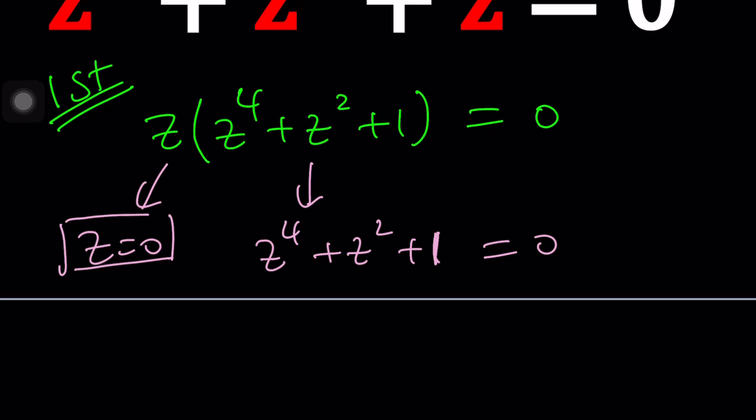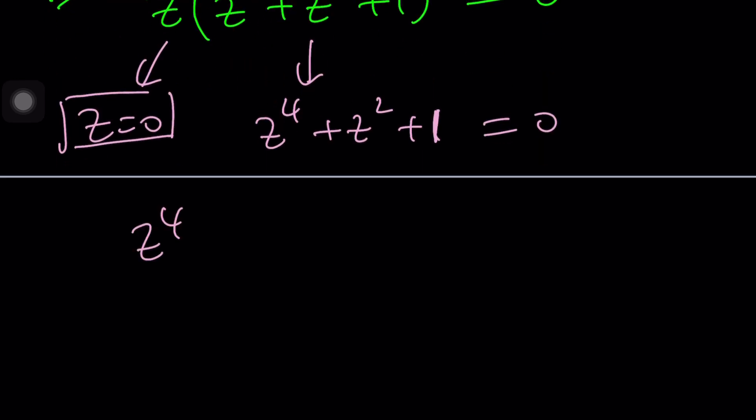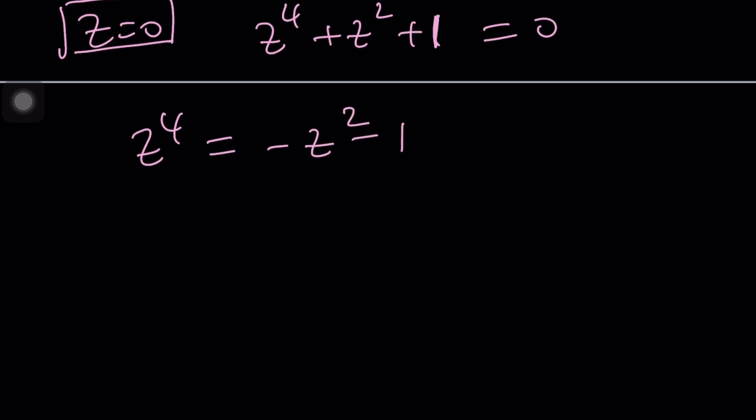To use the quartic formula, you could isolate Z to the fourth and then add something to both sides to make it a perfect square. And in this case, I think that will be something like 2K Z squared plus K squared. And then you do the same thing on the right hand side.